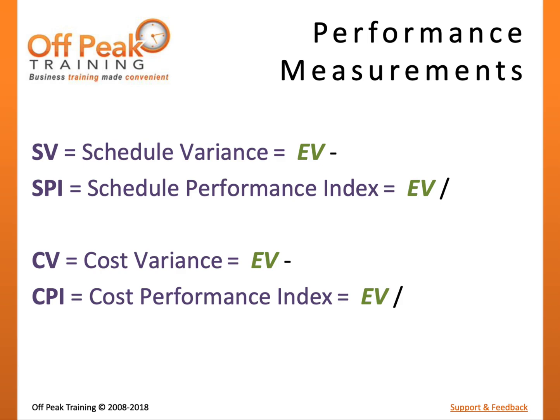Step three is to use the proper comparative value. To understand schedule performance, we compare what we earned against what we should have earned, or Planned Value. Schedule Variance measures the difference between work completed and work planned; SPI measures the ratio of work completed to work planned. To understand cost performance, we compare what we earned against what we spent, or Actual Costs. Cost Variance measures the difference between the value of work completed and actual costs; CPI measures the ratio of work completed to actual costs.